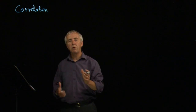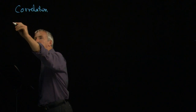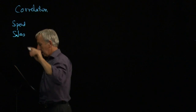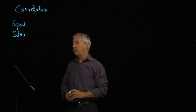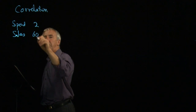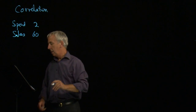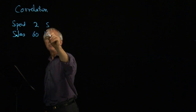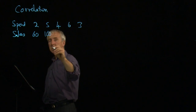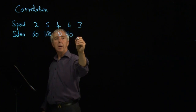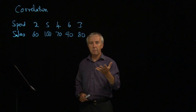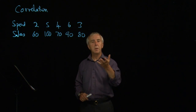Let's have a look at a particular example. Suppose we run an advertising campaign — we have our spend on adverts and our sales, all in thousands of pounds. We run five different advertising campaigns. The first one we spend 2,000 and get 60,000 pounds in sales. Then we spend 5,000 and get 100,000 pounds in sales; 4 and 60; 3 and 70; 90 and 80. We want to know how the sales figures correlate with spending — is it true that the more we spend, the better the sales figures will be?